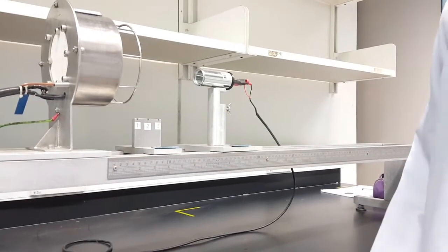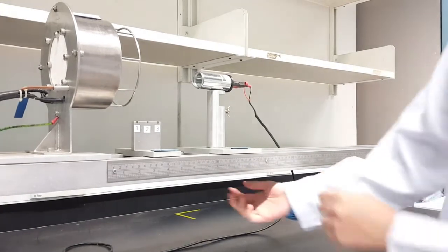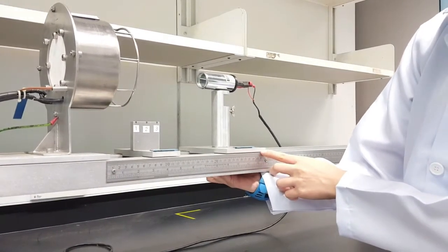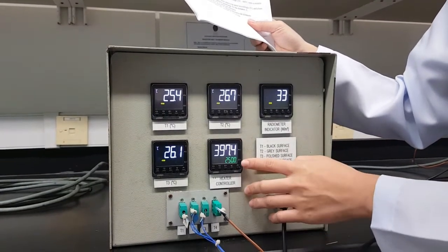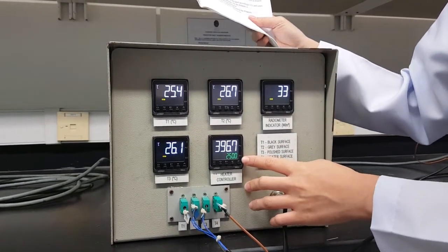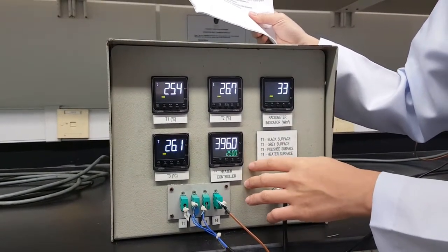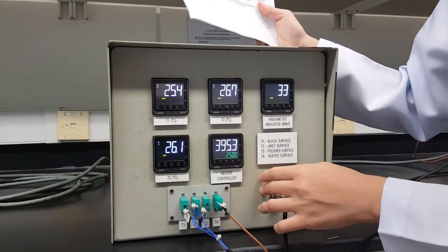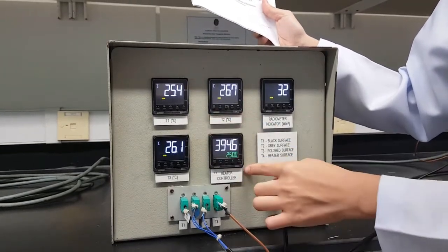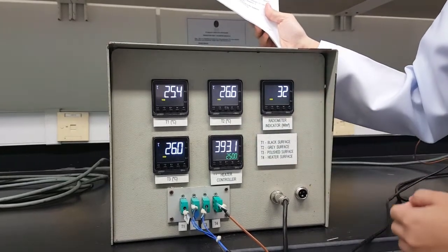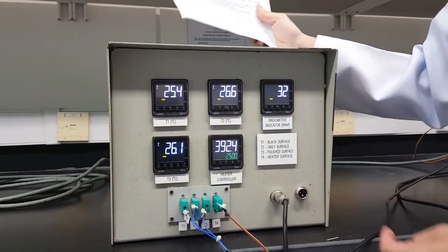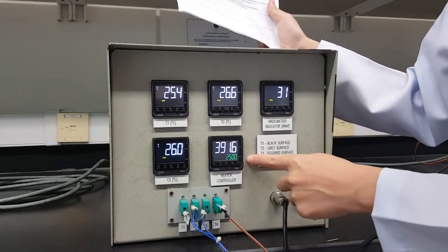For the first part, for Stefan-Boltzmann, we first have to put the radiometer at 30cm. Then, we set the temperature to 250 degrees Celsius. And when the temperature is stabilized, we take the readings of T1, T4 and also the radiometer. And then, after the readings are taken, we repeat the experiment up to 400 degrees Celsius.